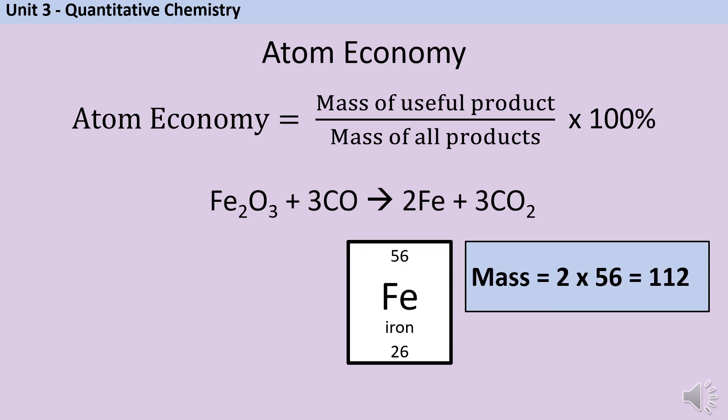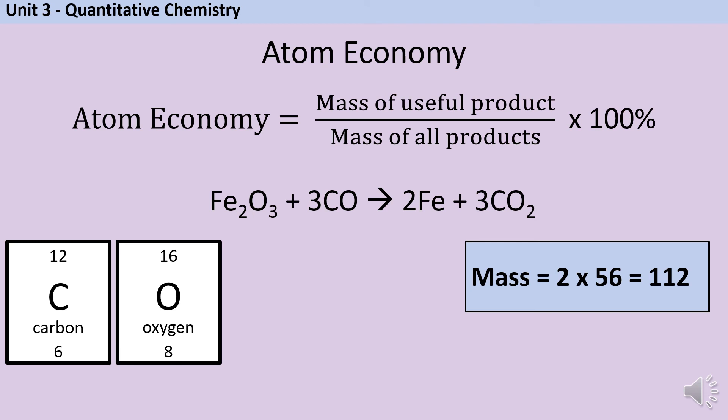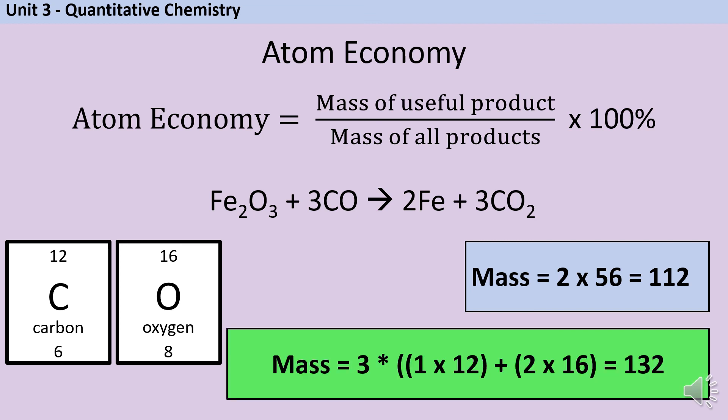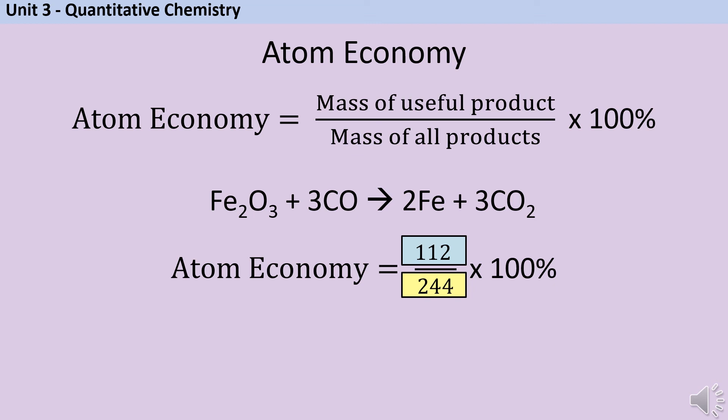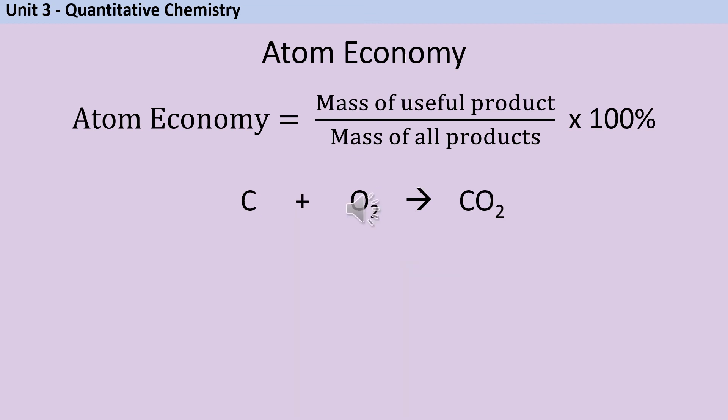Let's take another example. Here's the extraction of iron from iron oxide using carbon monoxide. So my useful product is the iron that I've extracted, and you can see there there's a coefficient of two. So two times 56, the relative atomic mass of iron, is 112. Now as we said before, we could do 112 divided by the mass of everything on the left hand side, but I've already worked out iron, so why don't I just work out carbon dioxide instead. The relative formula mass of carbon dioxide is going to be one times 12 for one carbon, plus two times 16 for two oxygen, which is 44, and three times 44 is 132. If I add together 112 and 132, I get a total mass on the right hand side of 244. So now I can plug those numbers into my atom economy formula. 112 divided by 244 times 100% is 46%.